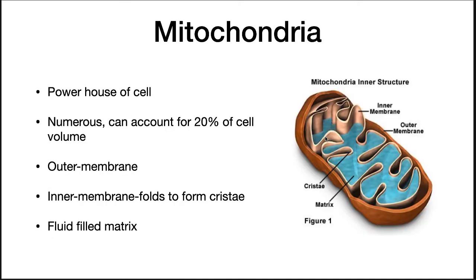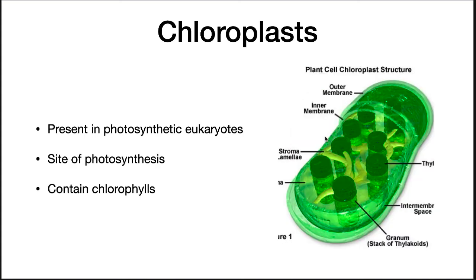Eukaryotic cells contain mitochondria, the powerhouses of the cell. They are numerous and can account for up to 20% of cell volume. They contain an outer and inner membrane, with the inner membrane folding to form cristae, which are packed with electron transport proteins that carry out respiration. Inside the mitochondria is a fluid-filled matrix. In photosynthetic eukaryotes, a chloroplast is the site of photosynthetic reactions and contains chlorophyll.